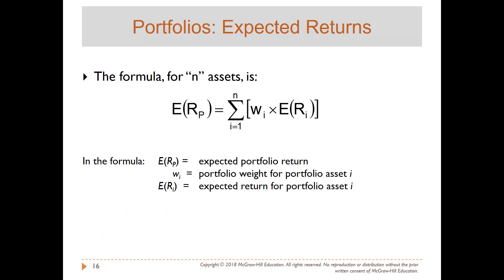The expected return on a portfolio is a linear combination, or weighted average, of the expected returns on the assets in that portfolio. For example, if I have a portfolio of two assets, the expected return is the first weight times the expected return of the first asset, plus the second weight times the expected return of the second asset.